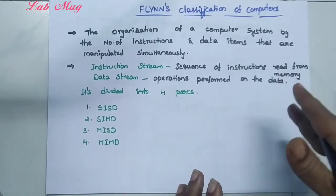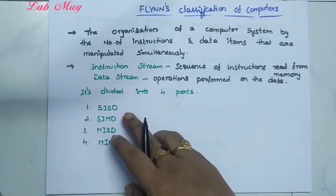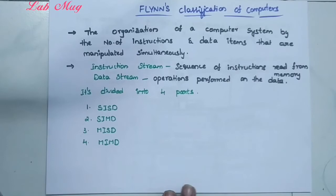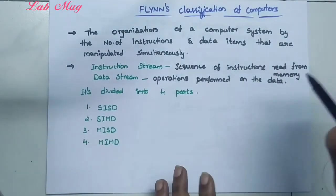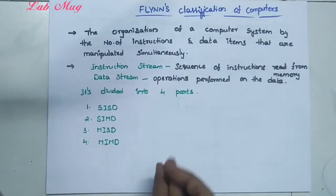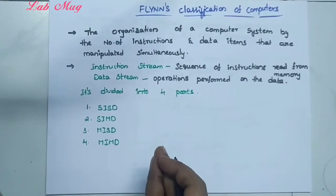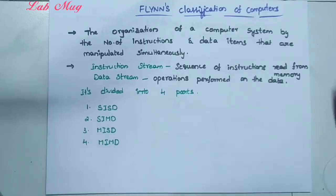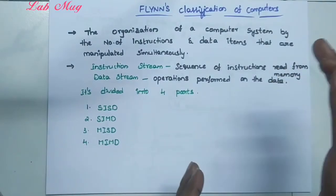Flynn's classification of computers is divided into four parts. We already mentioned the fourth part. So first of all, let's look at what Flynn's classification of computers is. Previously we looked at von Neumann architecture, and in stored program control concept we looked at three things, where we finally used the concept of parallel processing.